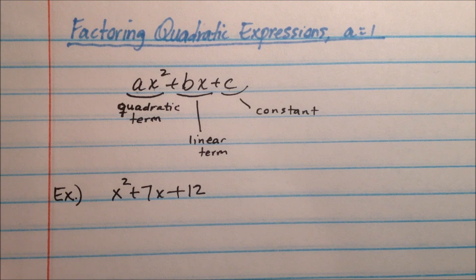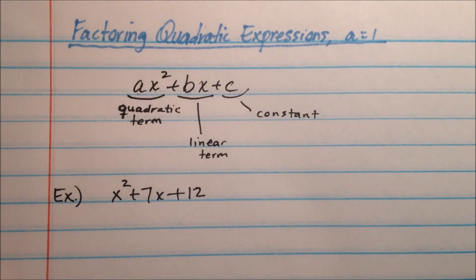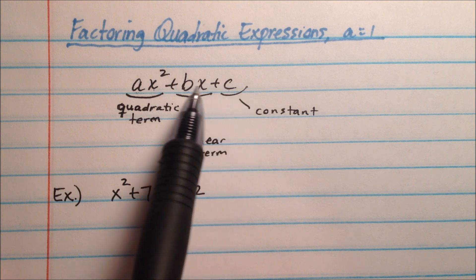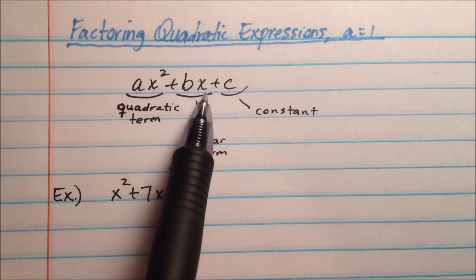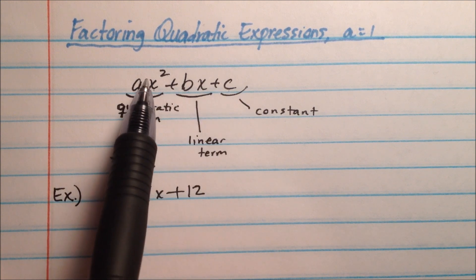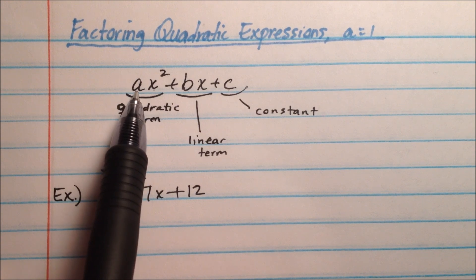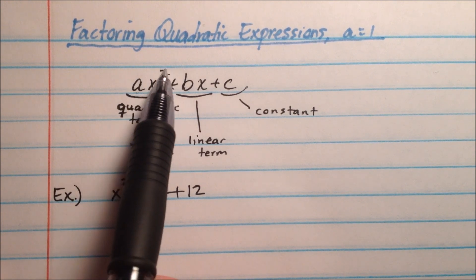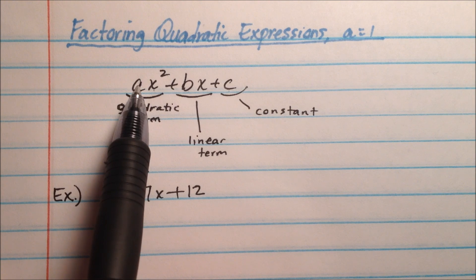First of all, what is a quadratic expression, and what does it mean for its a-value to be 1? A quadratic expression is any expression in the form ax squared plus bx plus c, where a does not equal 0. Because if a was 0, then this term right here wouldn't exist, and it would cease to be considered quadratic.